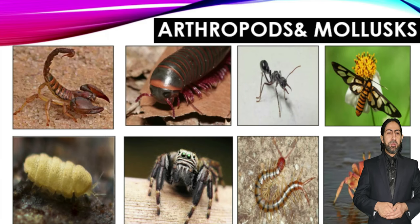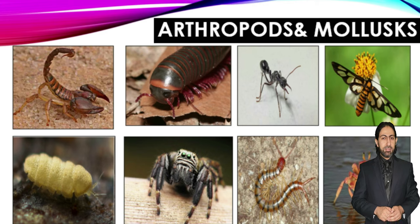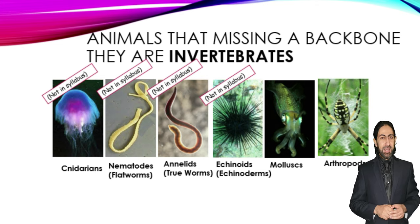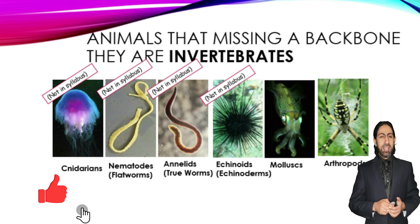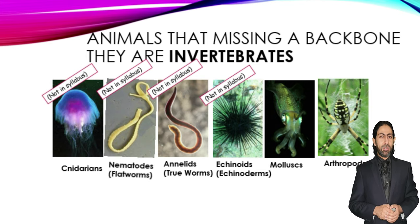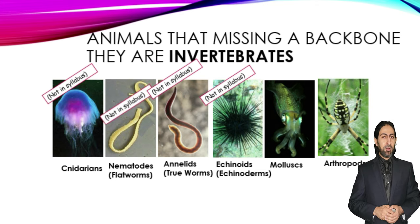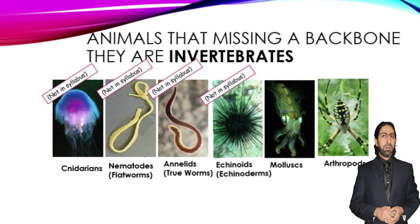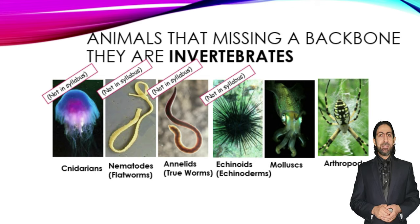Welcome, students. Today we will continue talking about the features of organisms, specifically arthropods and mollusks. Animals that lack a backbone are referred to as invertebrates. Cnidarians, nematodes, annelids, and echinoderms are not included in our new syllabus, but mollusks and arthropods are, so let's talk about them in detail.